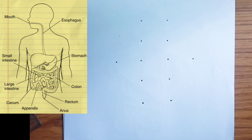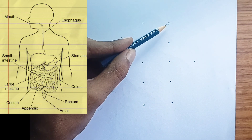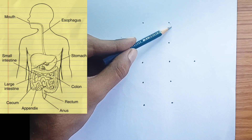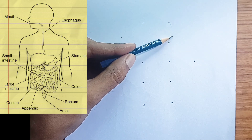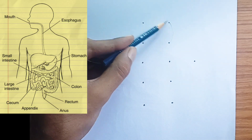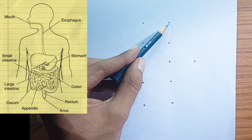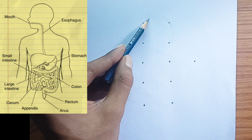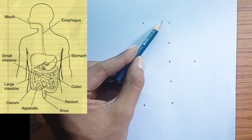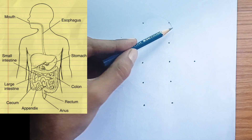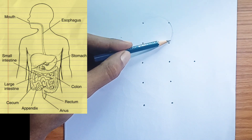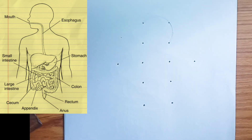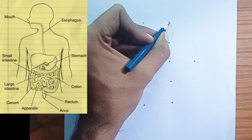This diagram illustrates the human digestive system, also known as the gastrointestinal, GI, tract. It shows the primary organs involved in the digestion and absorption of food and the elimination of waste. Here's a breakdown of the labeled parts and their general roles.